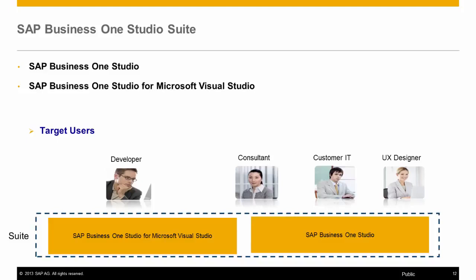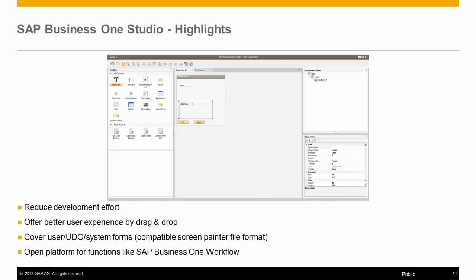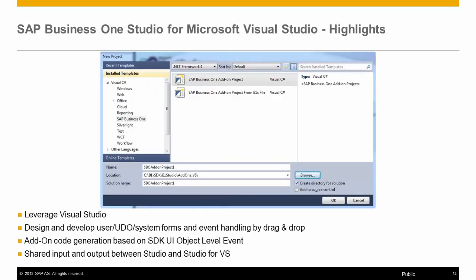SAP Business One Studio lets you open SAP Business One system forms in edit mode, modify existing controls and logic, add new controls, and design your own forms. It contains all the functionalities of Screen Painter while enhancing and optimizing its usability. The integration with Microsoft Visual Studio provides widgets for creation of add-on products for Visual Basic and C#. This interface streamlines the development process further, as much of the code for the UI and DI is generated for you.